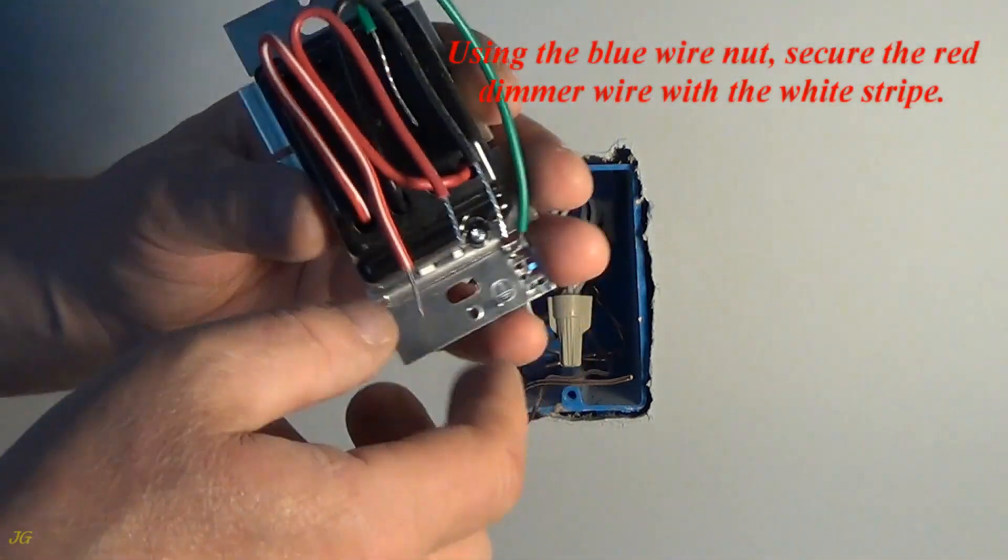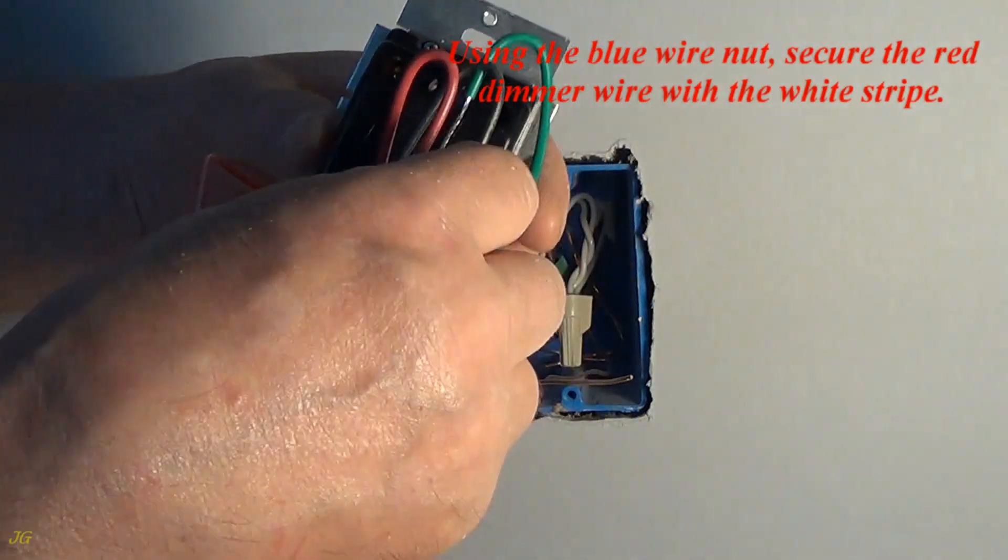Using the blue wire nut, secure the red dimmer wire with the white stripe.